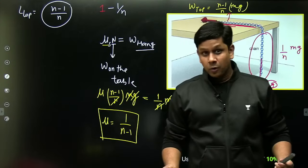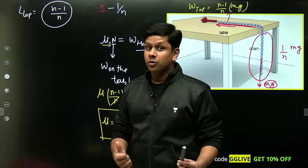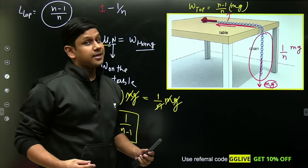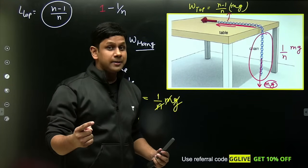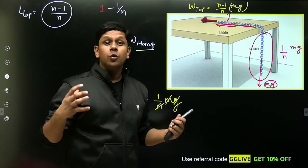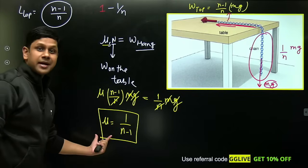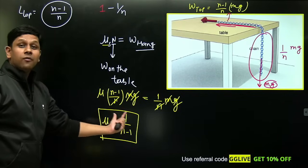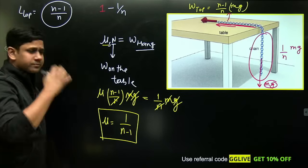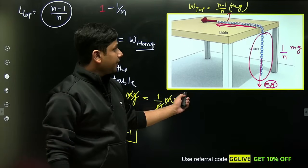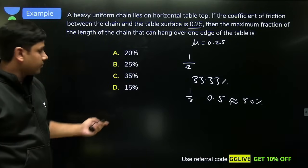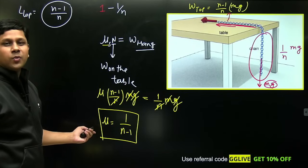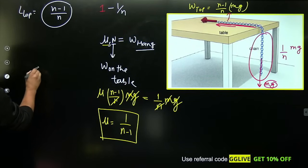While other students might take time to solve this question, in that same time you can do 3 to 4 questions. This will be a score boosting thing for you. So you can remember this directly: μ = 1/(n-1). Now what is asked in this question? We are given μ value as 0.25. We derived this formula μ = 1/(n-1), now let's put it in the formula. μ = 0.25.